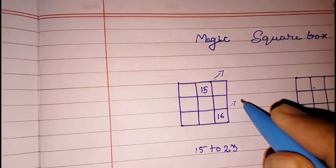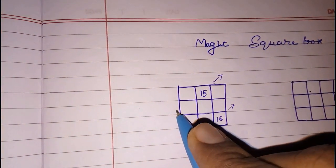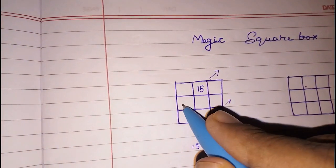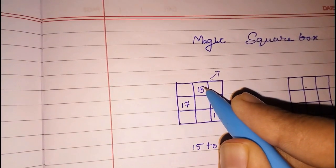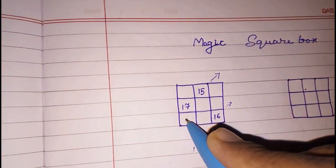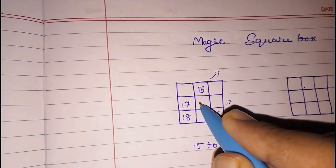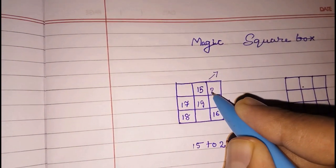Again we have to go in this direction here, no box so again we have to move it here, here it will come 17. Now we have to go in the upper side but upper side is full so we have to go downstairs, 18, 19, 20.